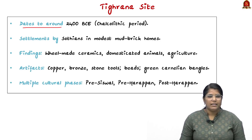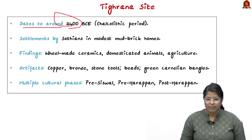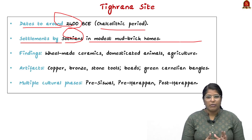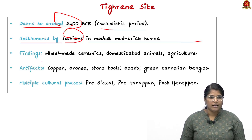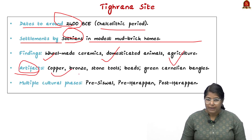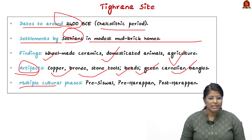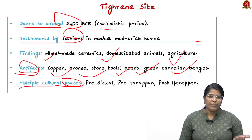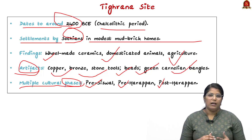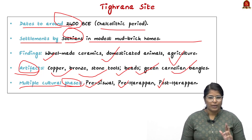The Tigarana site dates to around 2400 BCE, which is the Chalcolithic period. It has settlements with mud brick houses. Findings include wheel-made ceramics, domesticated animals, and evidence of agriculture. Artifacts include copper, bronze, and stone tools, beads, green carnelian bangles, and more. The site had multiple cultural phases — pre-Siswal, pre-Harappan, and post-Harappan cultures are all represented at this site.